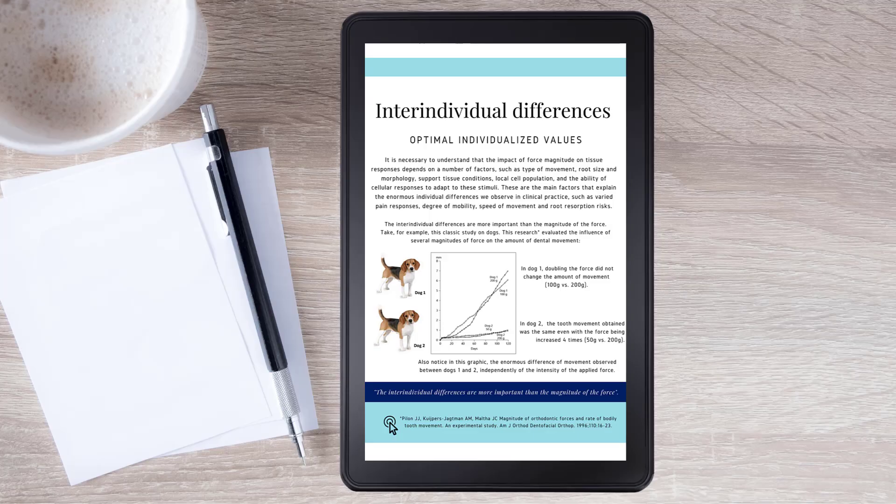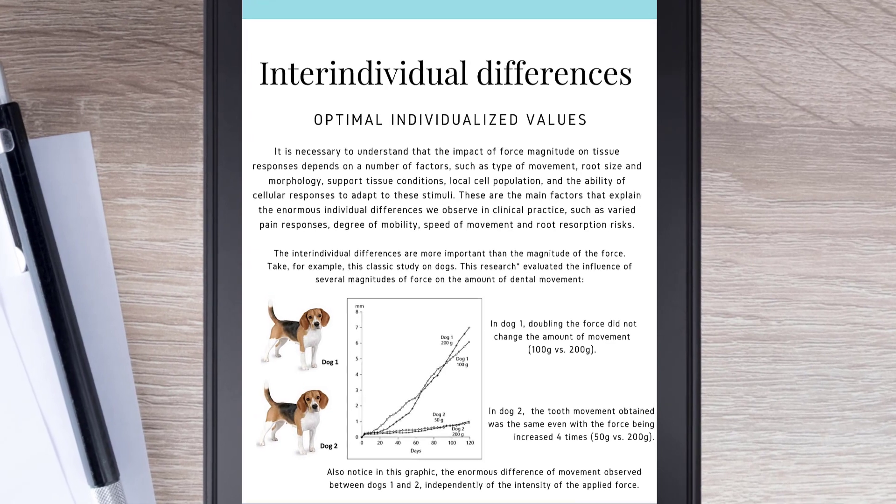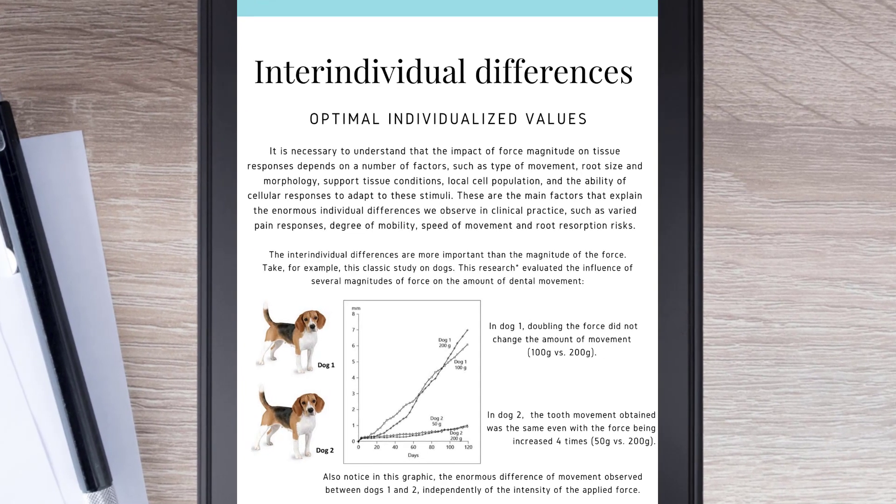Interindividual differences. Optimal individualized values. It is necessary to understand that the impact of force magnitude on tissue response depends on a number of factors, such as type of movement, root size and morphology, support tissue conditions, local cell population, and the ability of cellular response to adapt to these stimuli. These are the main factors that explain the enormous individual differences we observe in clinical practice, such as varied pain response, degree of mobility, speed of movement, and root resorption risks.